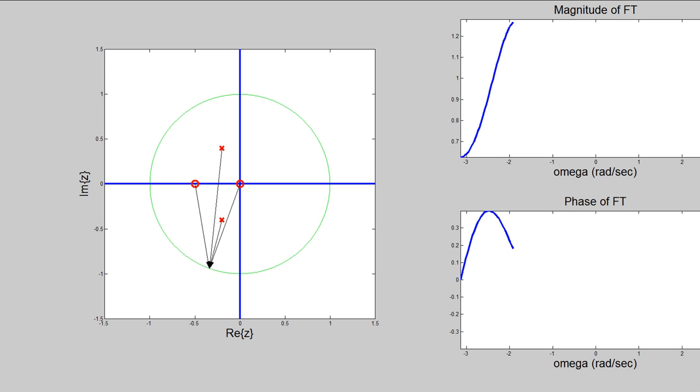In this illustration, we can see how the discrete time Fourier transform is getting computed. We see these vectors that we have drawn traveling along the unit circle, and the magnitude and phase of the Fourier transform getting traced out as those ratios and differences that we talked about.